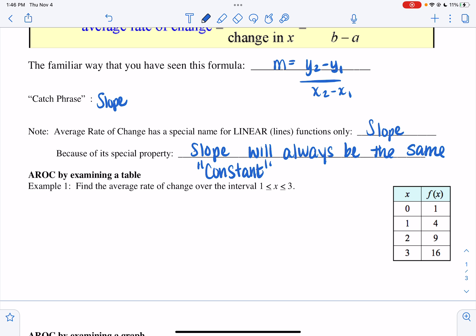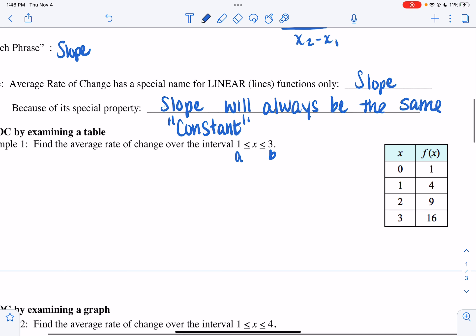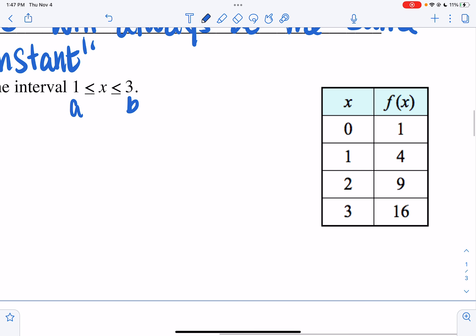Question number one is AROC by examining a table of values. So what we're going to do for this example is we want to find the average rate of change from 1 less than or equal to x less than or equal to 3. So if you think about it, these are my x values, or my a and my b. So if I look, I care about this point, and I care about this point.